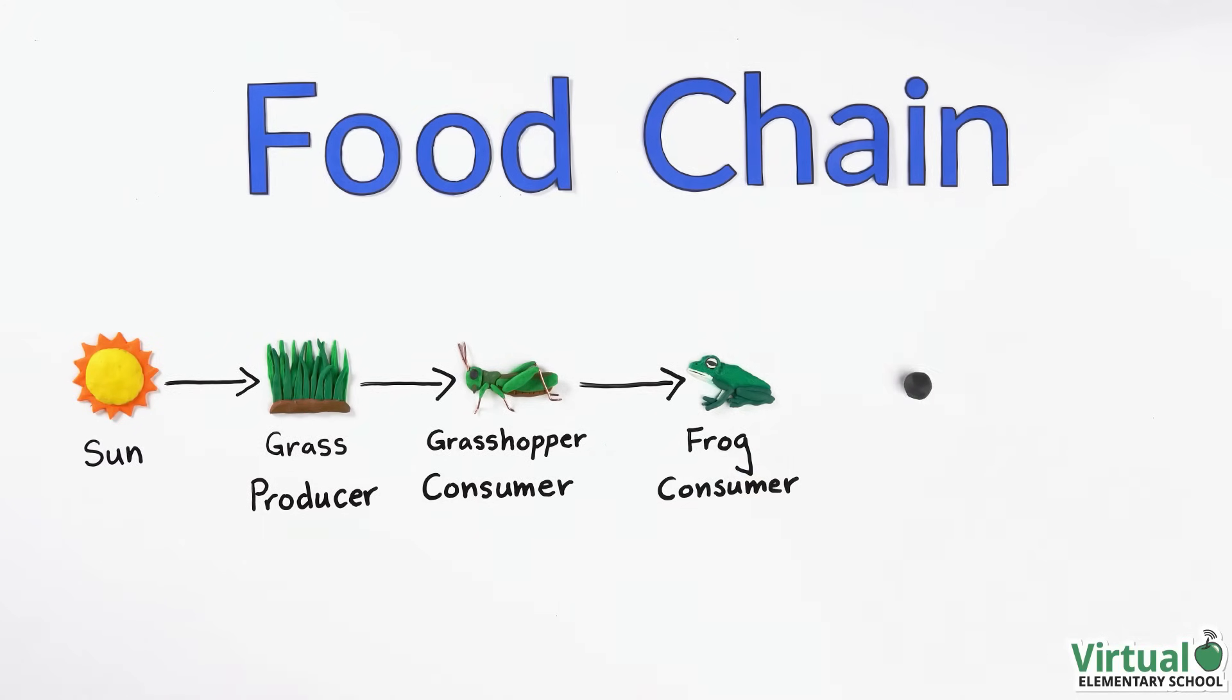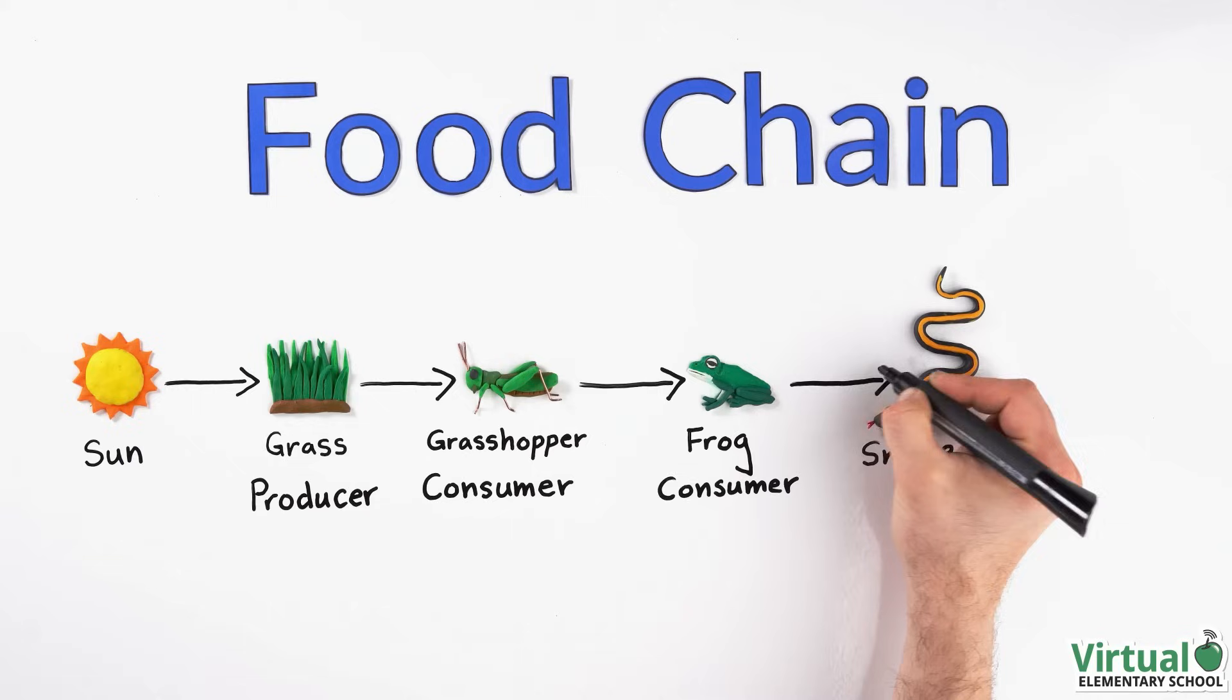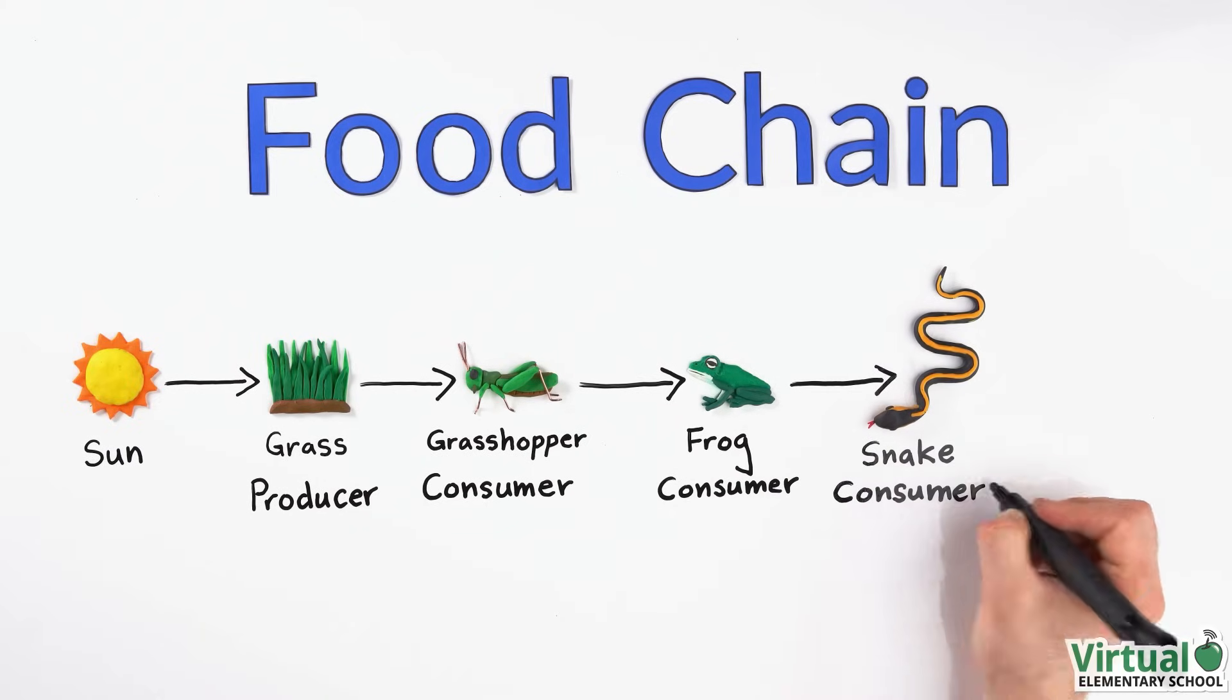The frog is then eaten by a snake. So the energy in the frog is transferred to the snake. The snake is a consumer too.